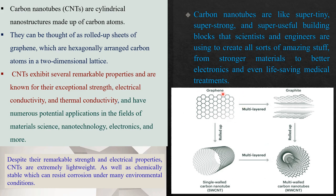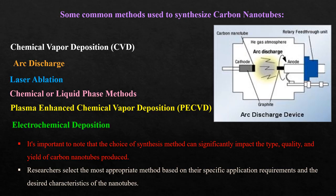How the graphene sheet is rolled up in a single layer, double layer and a multi-layer form we will talk about in the next slide. Carbon nanotubes are like super tiny, super strong, super useful building blocks that scientists and engineers are using to create all sorts of amazing things from stronger materials to better electronics and even life-saving medical treatments.